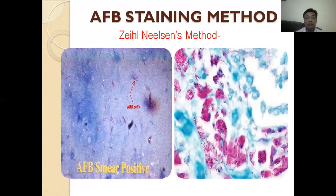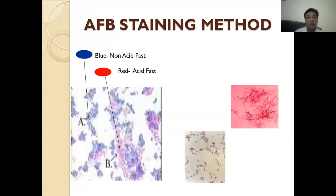These are smears which are AFB positive. Here you can see the Mycobacterium — the MTB cells — and they look like bacilli, rod-shaped bacilli. If you see the blue cells, they are known as non-acid-fast, and the red colors are acid-fast.